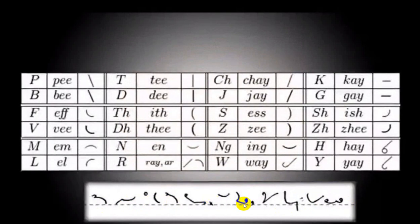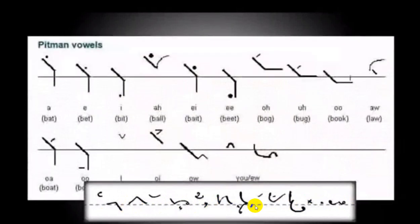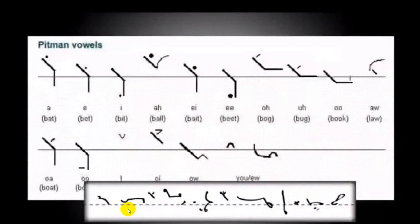In essence, there are 24 consonants that could be represented in Pitman's shorthand, 12 vowels, and 4 diphthongs. The consonants were indicated by strokes, the vowels by interposed dots.